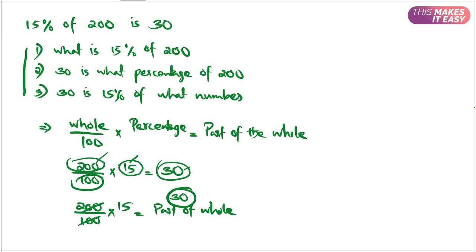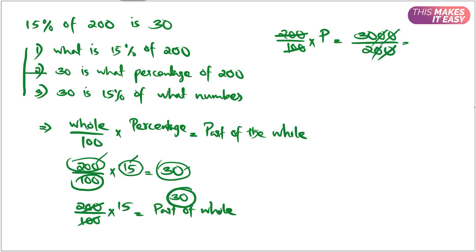Now let's look at the second question: 30 is what percentage of 200? Here we know the part of the world and the world, but we don't know the percentage. So: 200 divided by 100, we don't know the percentage, but we know the part of the world is 30. Now we use cross multiplication — taking the 100 here and 200 here — so the percentage is 15. That's very simple.